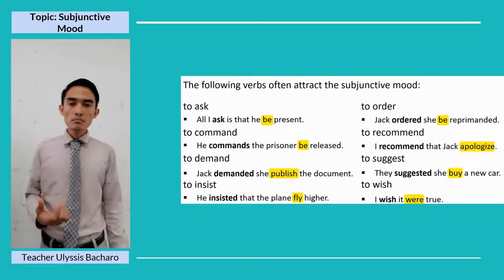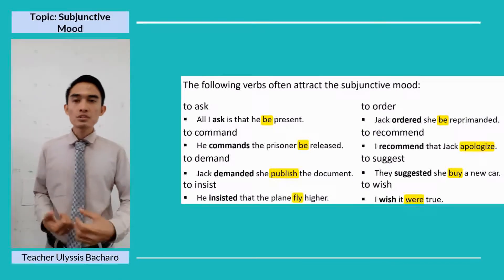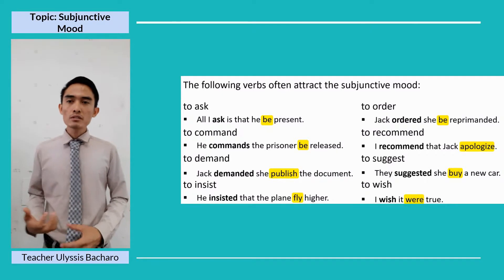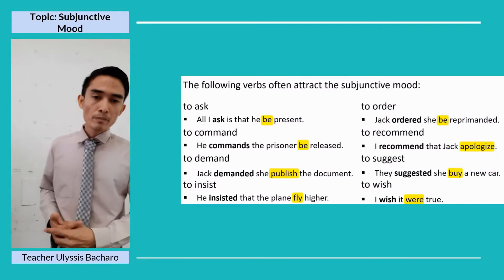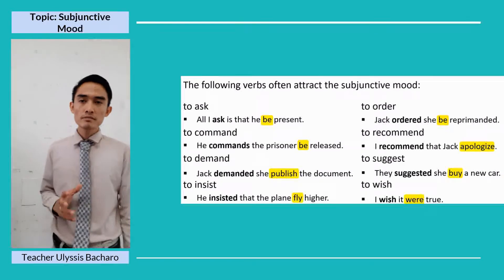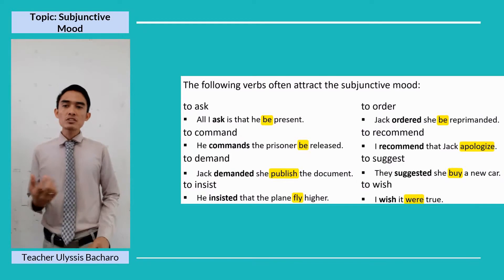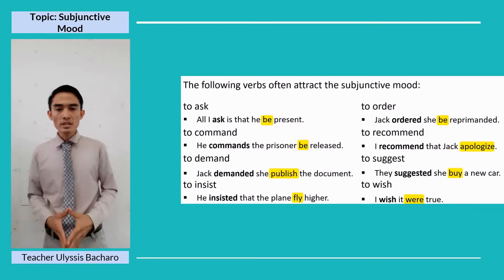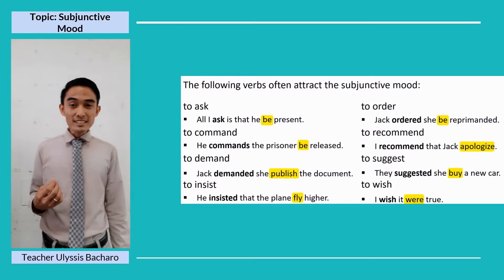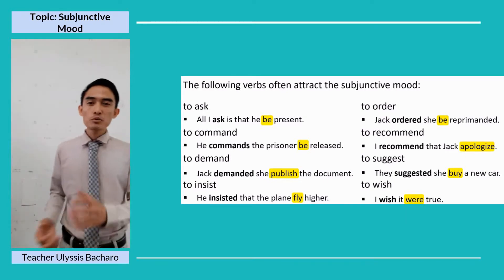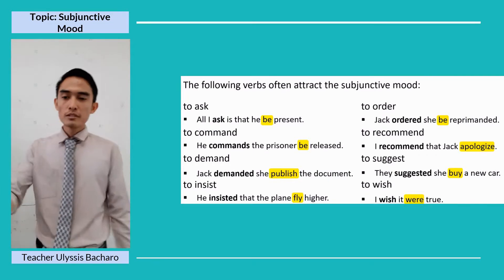'Jack ordered she be reprimanded' — instead of 'she is reprimanded,' we say 'she be reprimanded.' 'I recommend that Jack apologize' — normally 'Jack apologizes,' but in subjunctive mood we use 'apologize' for Jack. 'They suggest she buy a new car' — normally 'she buys a new car,' but in subjunctive mood 'she buy a new car.' 'I wish it were true' — 'it' followed by 'were,' because it is in subjunctive mood.